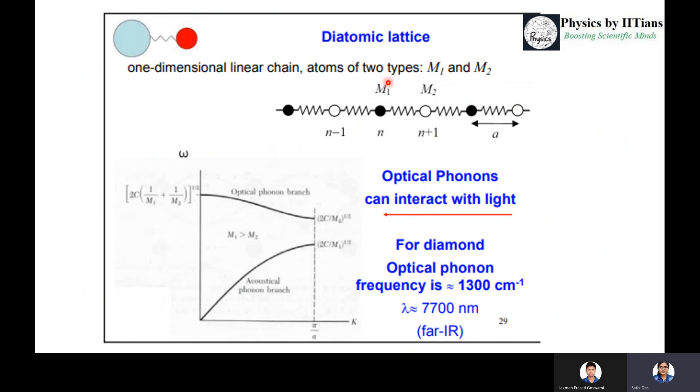In the monoatomic case, we take only one mass because the atom is single, so we only take it as M. But here, for the case of the diatomic lattice, we are taking atoms of two types, one with mass M1 and other with mass M2. The cases which we have studied earlier for the monoatomic lattice will be the same as the diatomic lattice.